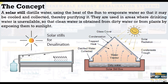As you can see, the concept is simple. Solar radiation rays penetrate the glass cover. It's a simple box covered with a glass cover to permit solar rays to penetrate and evaporate water from the basin.